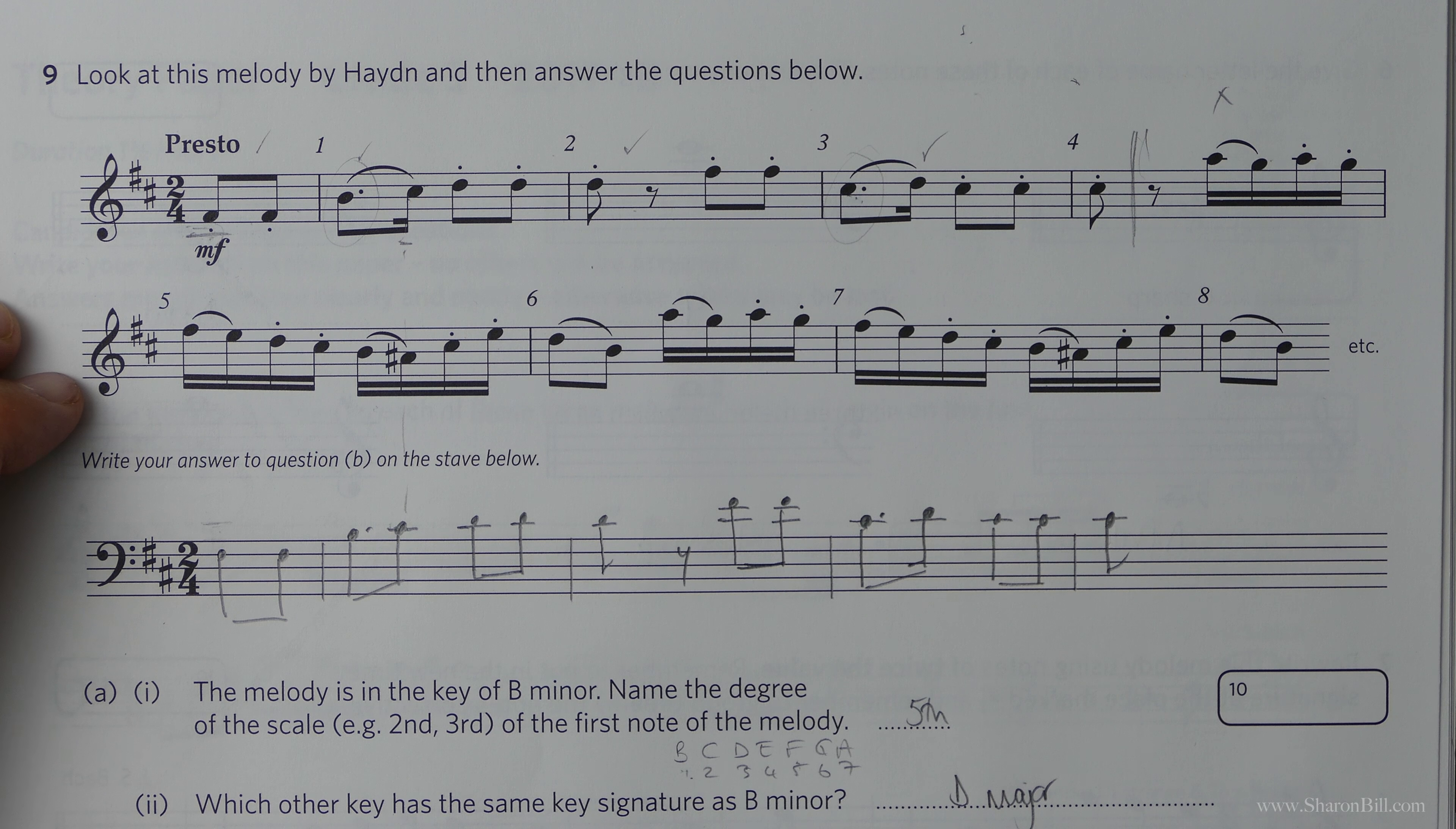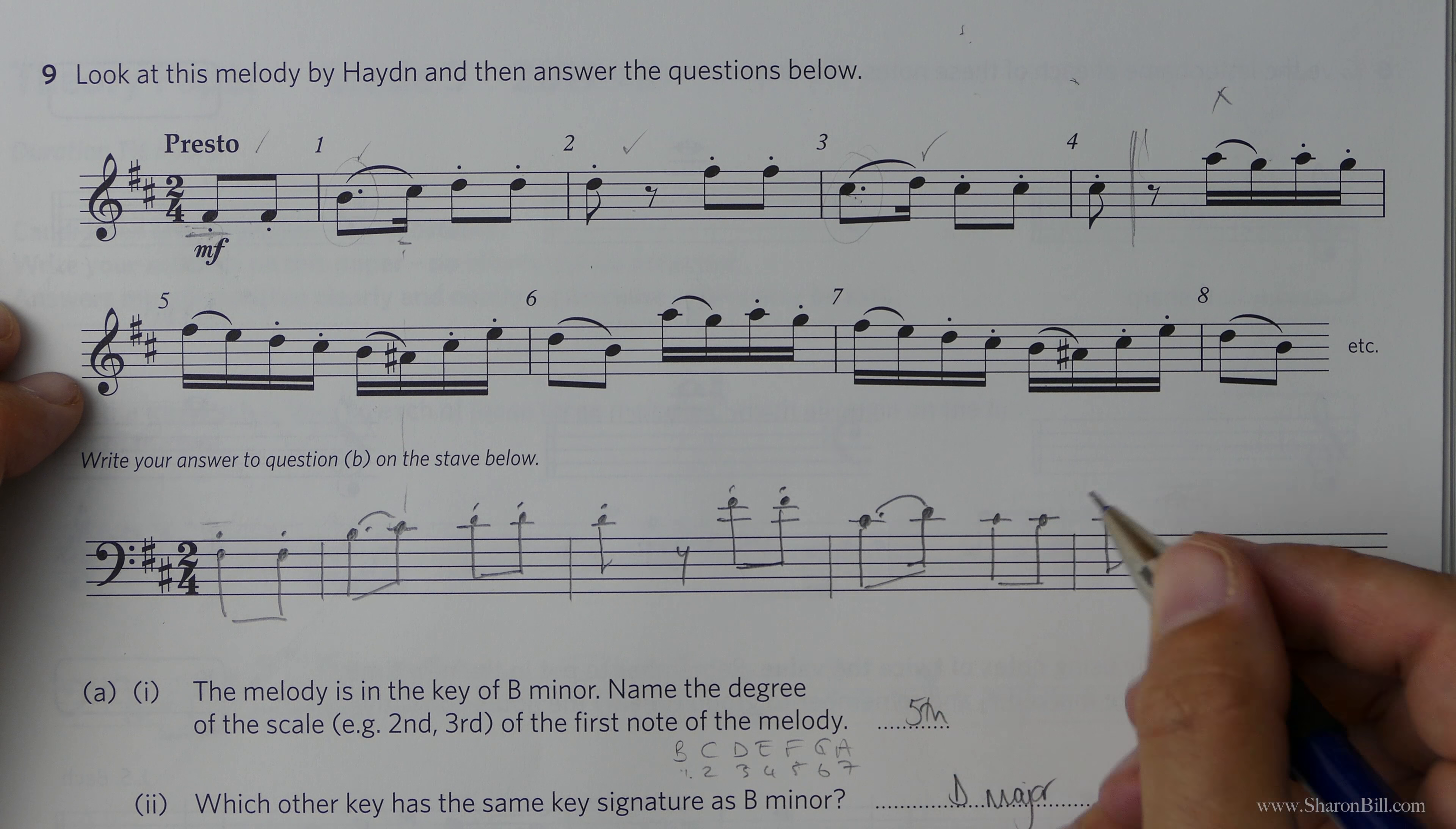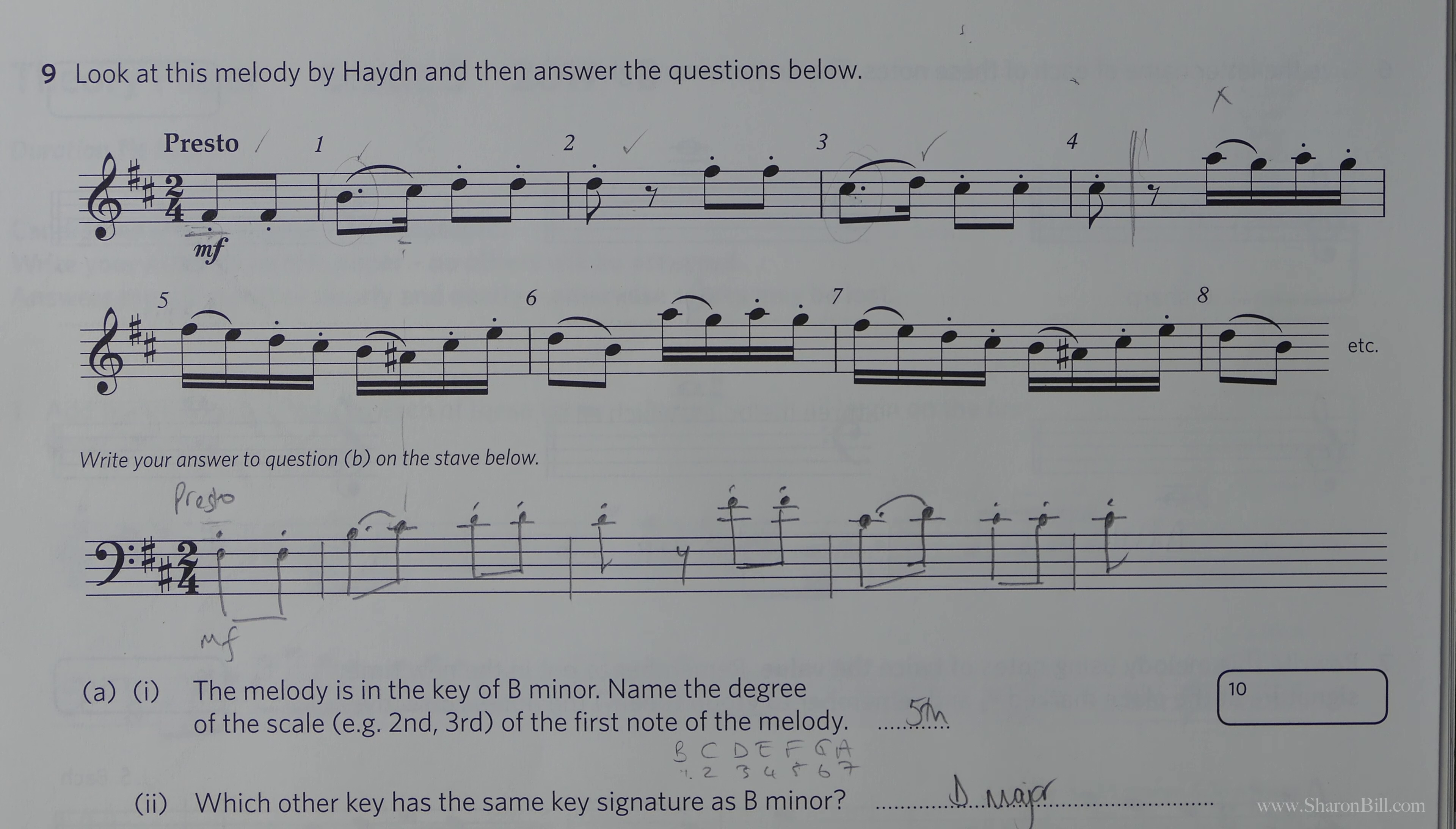So that's all the thinking done. However, I'm just going to make sure I earn all of those points just by adding the articulation marks. Let's just go the extra mile. MF. Presto. There we go. And that's that question complete. And that's that paper complete.